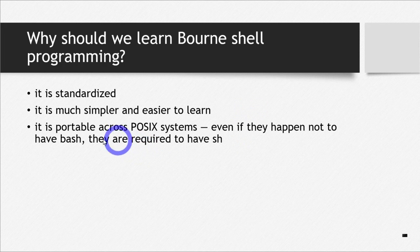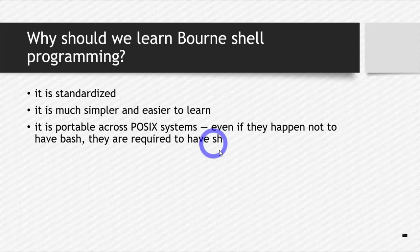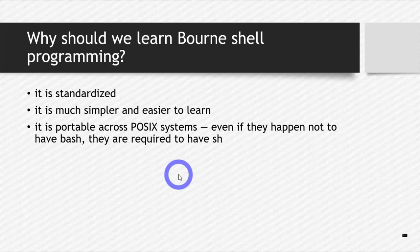The third and most important point is that born shell scripting is portable across all POSIX systems. Even if a system does not have bash, it will always have born shell, because all POSIX systems are required to have born shell. All Linux systems always have born shell or any other compatible shell that supports born shell scripting. This means if you write code in born shell scripting, it will always be compatible in all Linux and Unix-like systems — all systems which are POSIX compliant. You will never have compatibility issues with born shell scripting — it is portable, and that's a very important point.